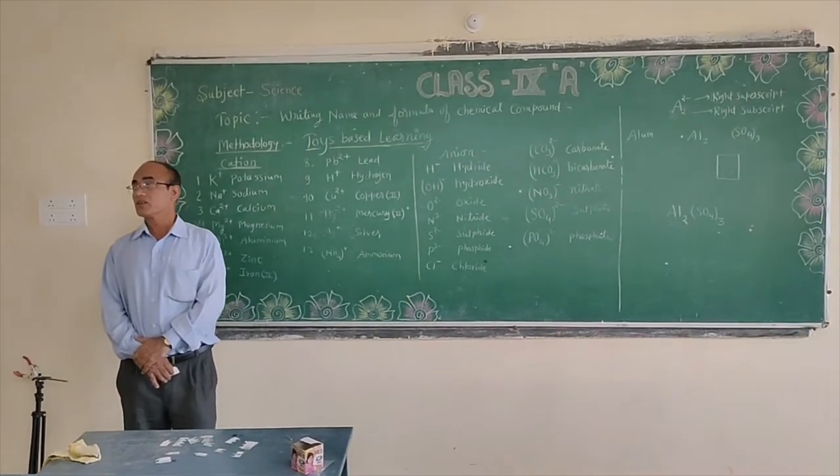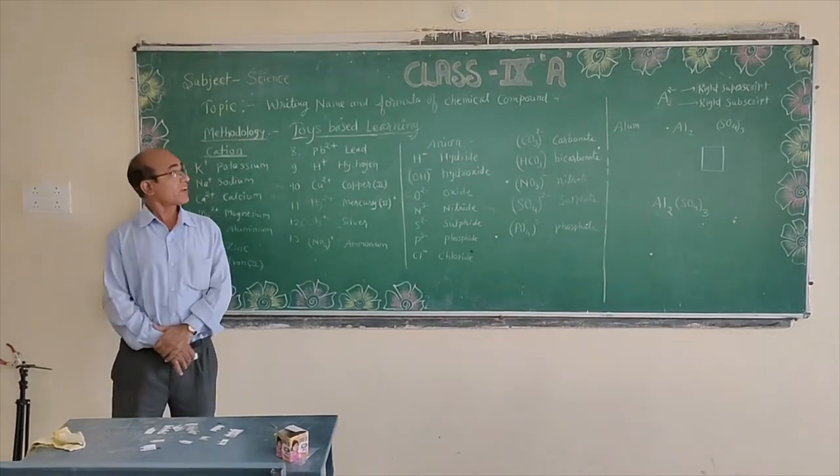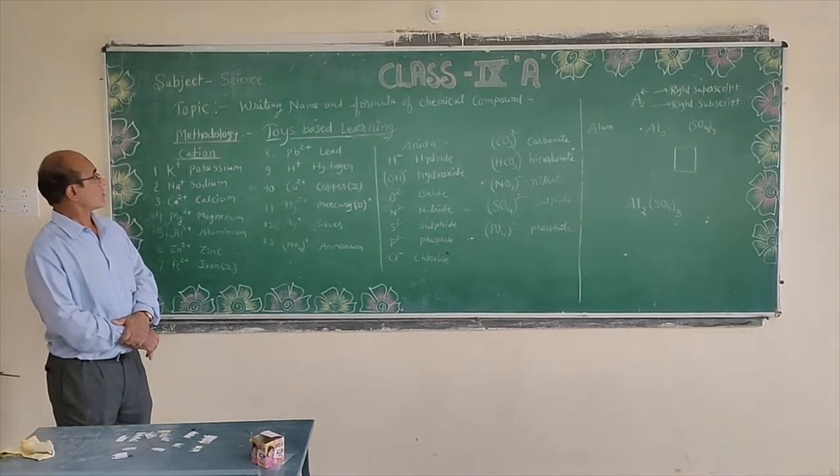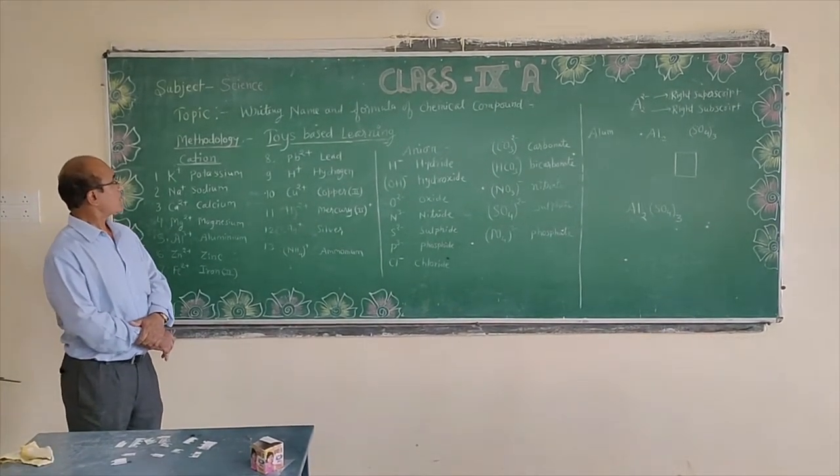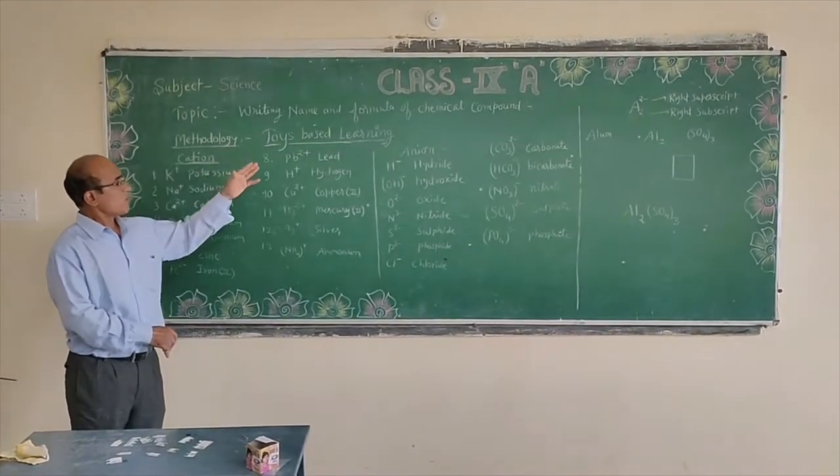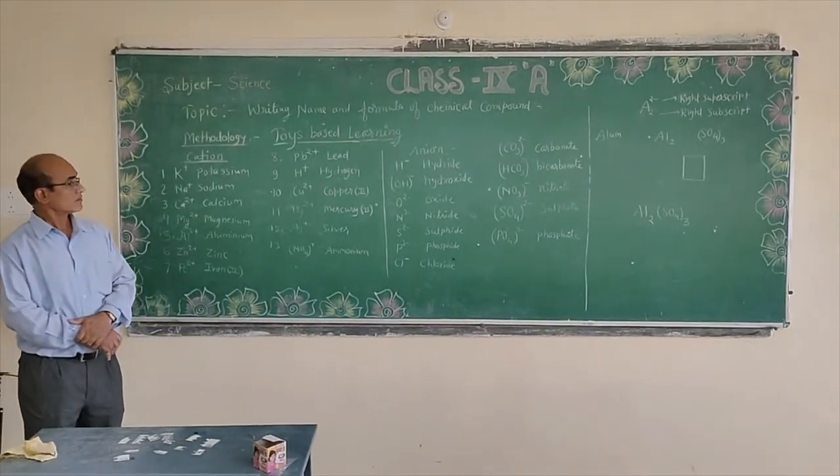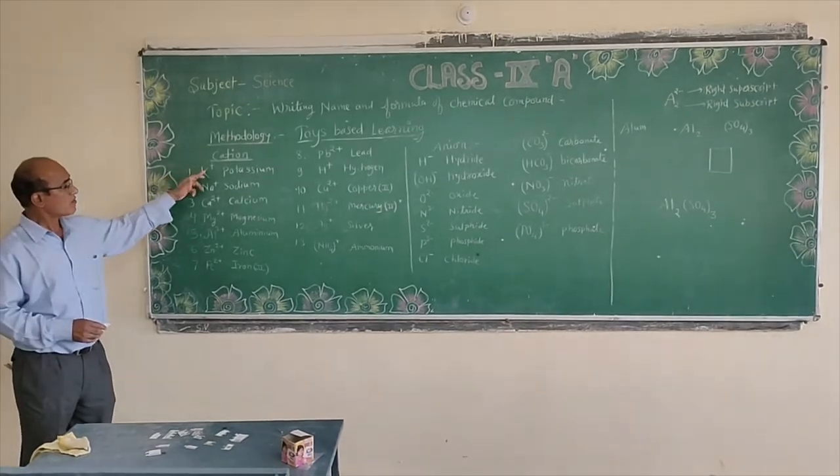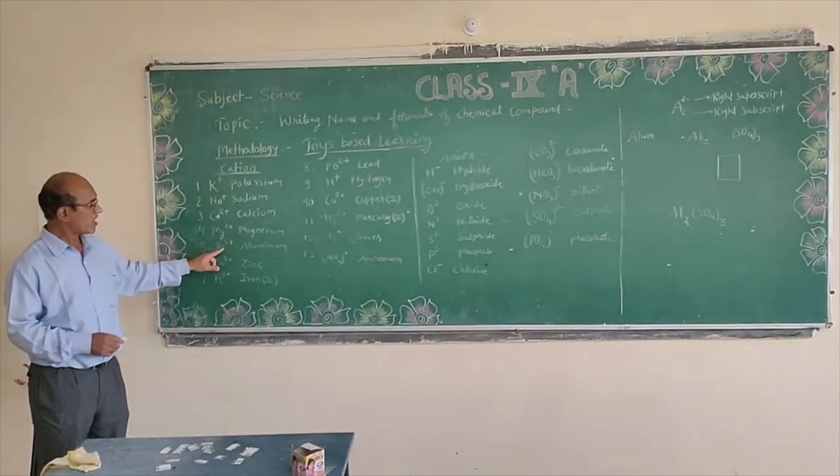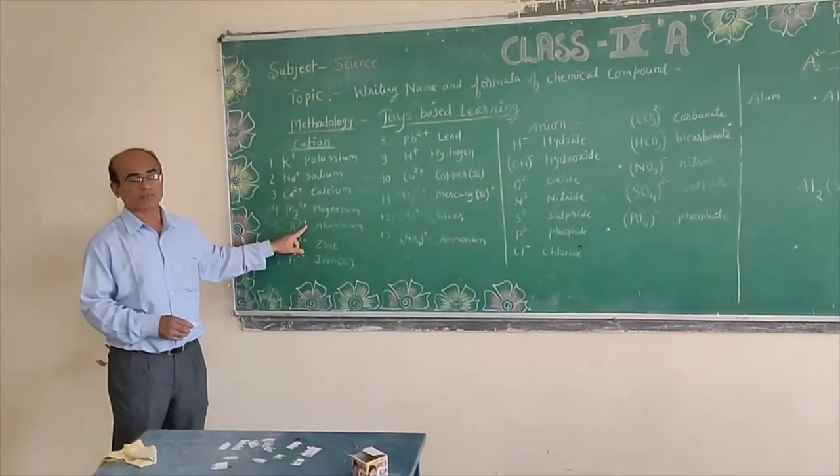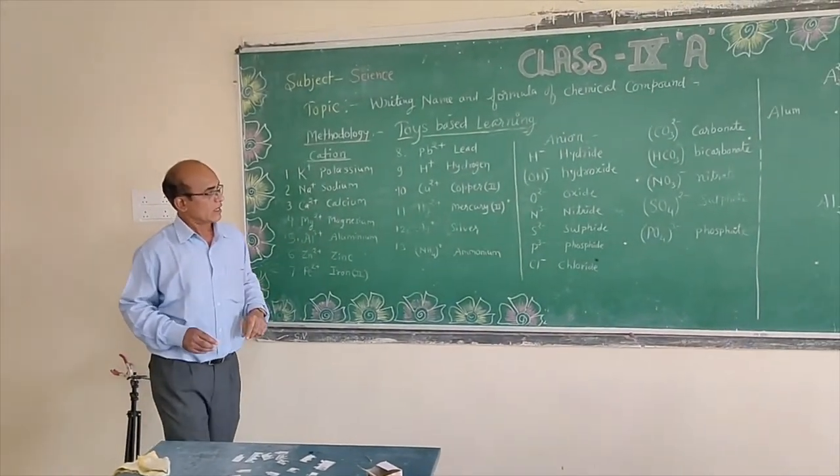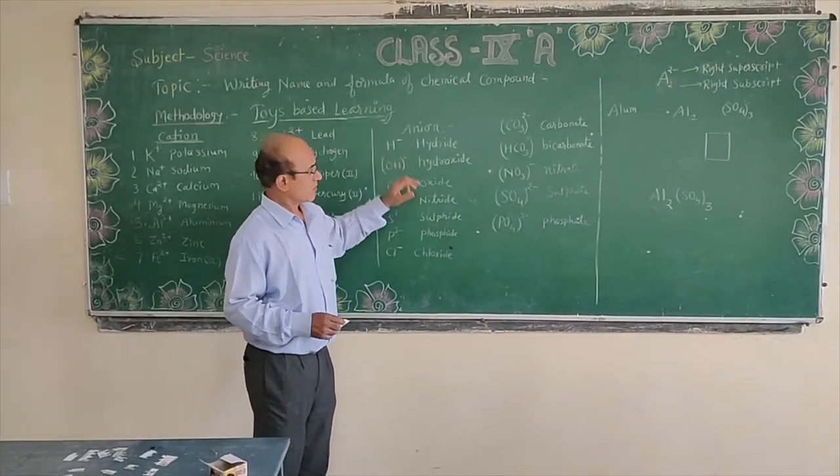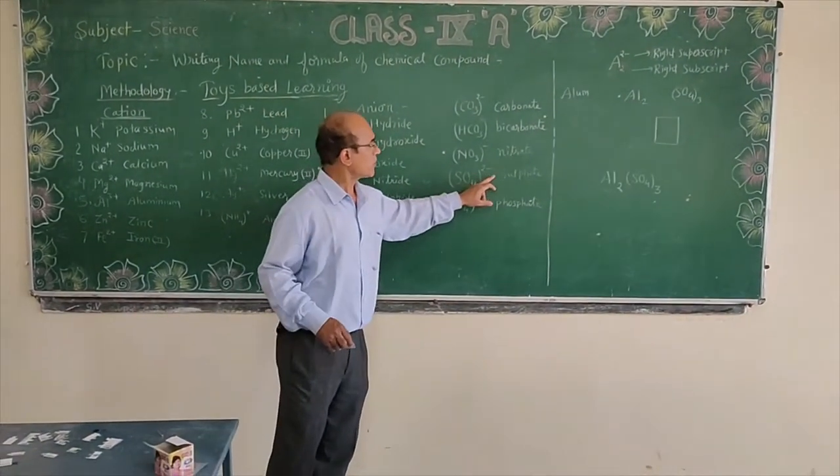Good morning students. We are studying writing name and formula of chemical compounds. We are adopting child-based learning. I am explaining that potassium has one positive charge, aluminum has three positive. In anions, hydroxide has one negative and sulfate has two negative.